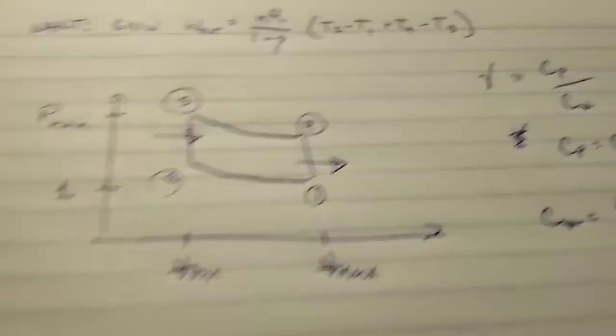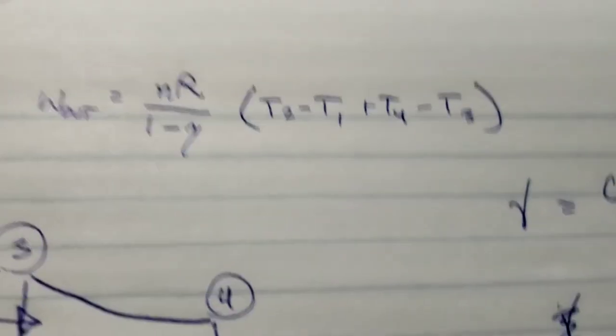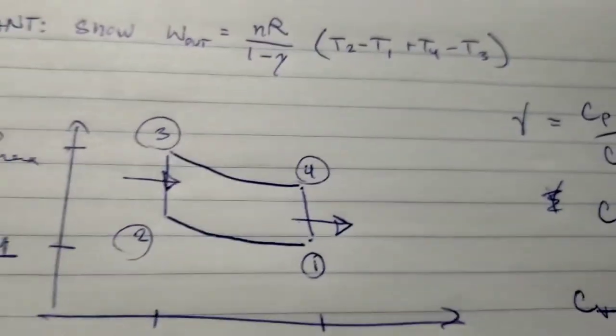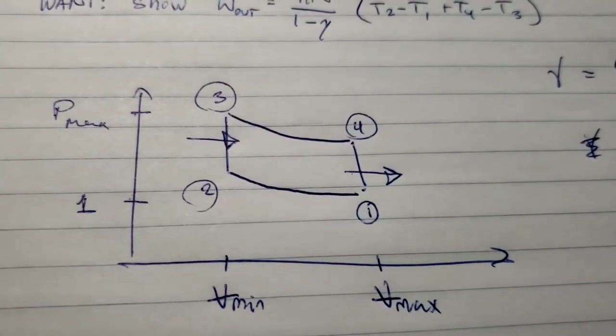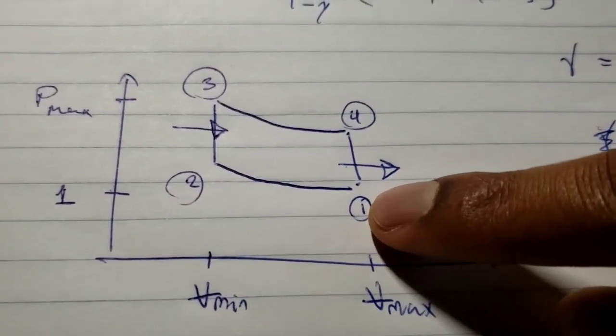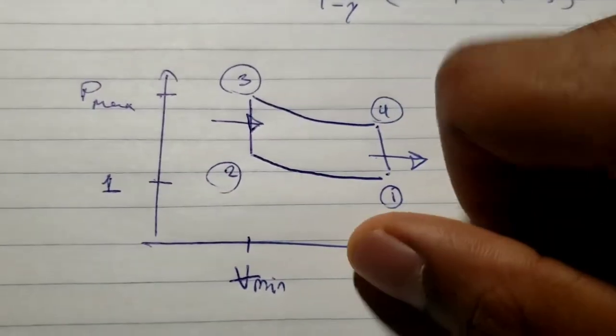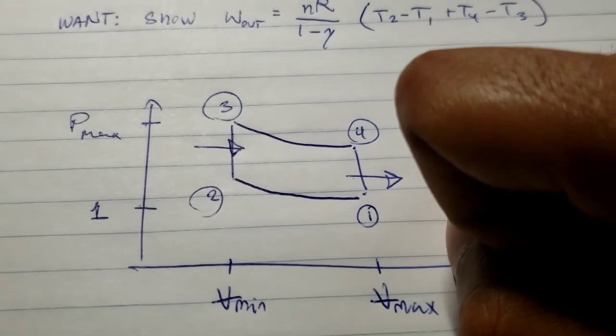To do that, we want to show that this equation is true by analyzing the cycle. Looking at the diagram, we start at 1, then volume decreases and pressure increases on the way to 2. From 2 to 3 is an isochord process where no work is done.